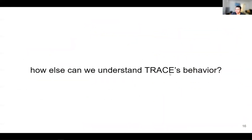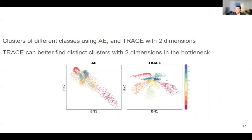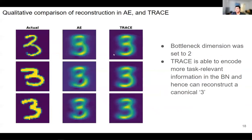To further understand TRACE behavior, we can look at the encoded bottleneck features when we have only two dimensions and see how the TRACE network clusters different classes. TRACE does a much better job than the autoencoder — in the autoencoder, many classes overlap with each other. We can also look at the reconstructed outputs: TRACE reconstructs the input much better. One interesting observation is that because TRACE encodes more task-relevant information in the bottleneck, it can reconstruct a canonical or typical example of a class, even when different instances of that class vary.